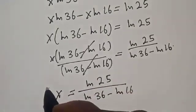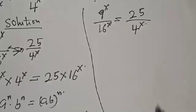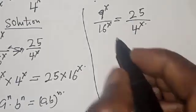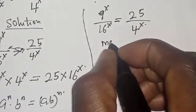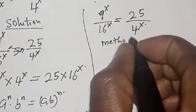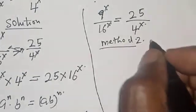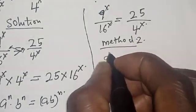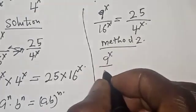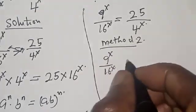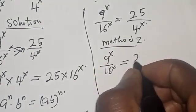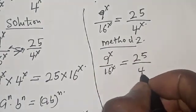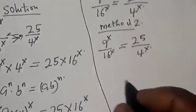That is our final answer. We may also solve the given equation using another method — let's call this Method 2. We have 9 raised to power s divided by 16 raised to power s is equal to 25 divided by 4 raised to power s.